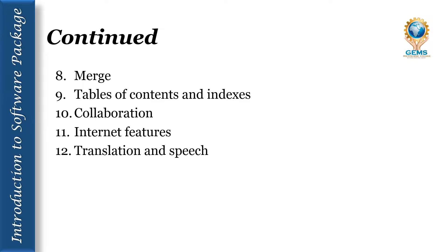Tables of contents and indexes allow you to automatically create a table of contents and indexes based on special codes that you insert in the document. Collaboration allows users to track changes to the document when more than one person is editing. Some cloud-based word processors also allow multiple users to edit the document at the same time. Internet features allow users to embed web links into their documents and format their documents for the web.